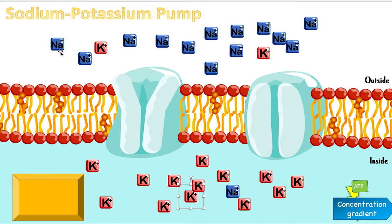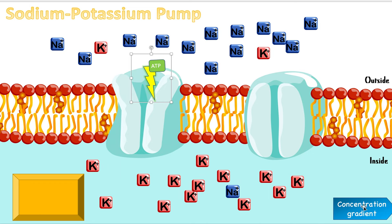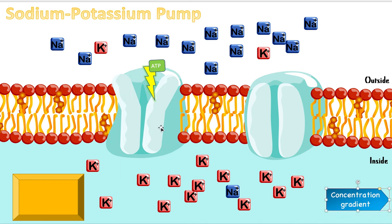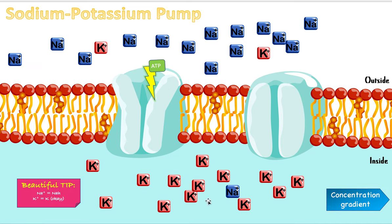You might ask: why does the cell like to be this way? Why does it want so much sodium outside and so much potassium inside? This is a great question, and you'll learn about it when you study neurons. The fact that so much sodium is outside and so much potassium is inside is very important for membrane potential. You'll learn about that later. For now, just understand the concept of active transport. Again, this process required ATP, did not require a concentration gradient, but required a pump. A good way to remember: the cell does not want sodium — nah, it sends it out. And for potassium, it says okay and brings it in.